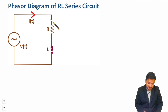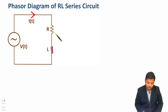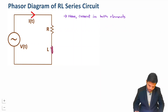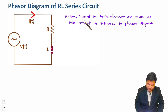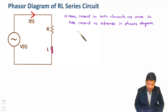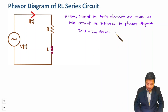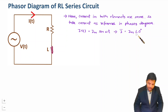For a series connection of R and L, the current through both elements R and L will be I(t). Since current is the same through R and L, I will be taking current as reference in this phasor diagram. Let us consider current I(t) = Im·sin(ωt), and in phasor form current I has maximum magnitude Im at phasor angle 0°.